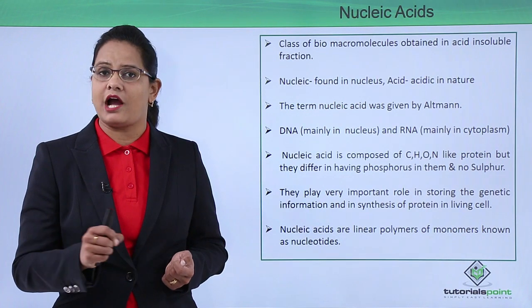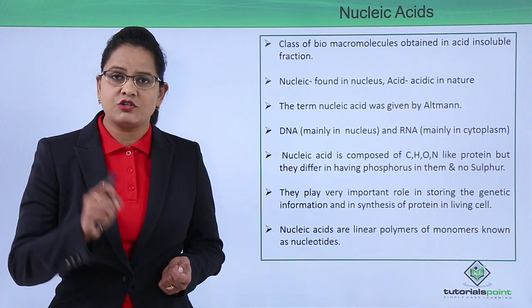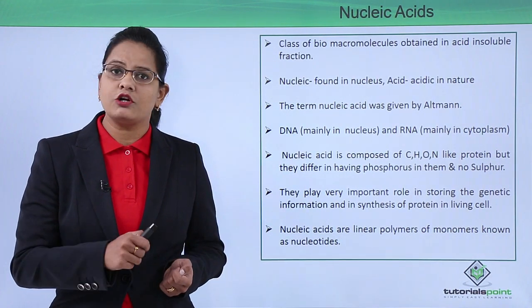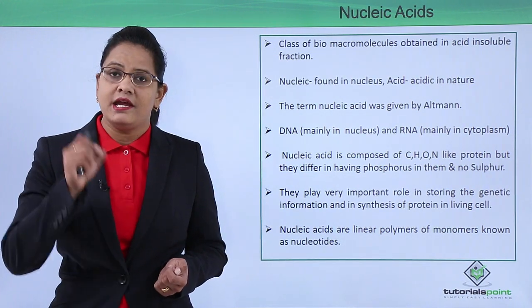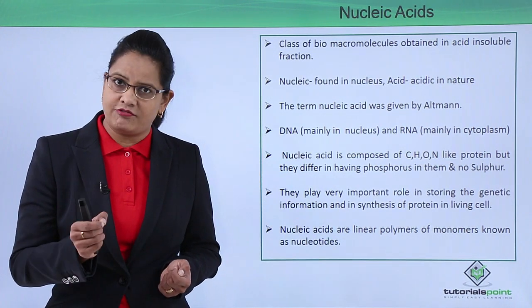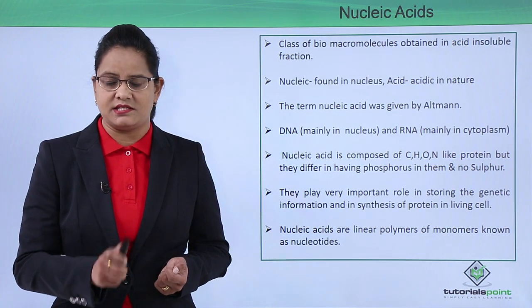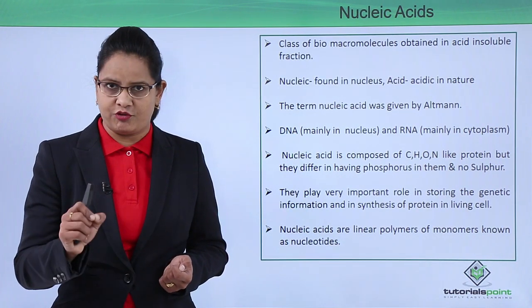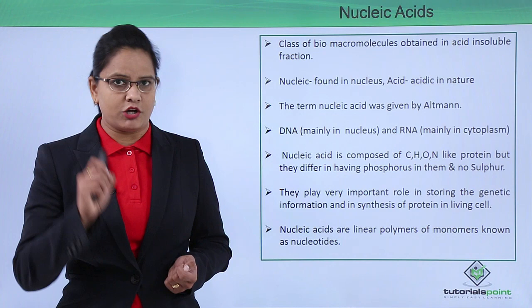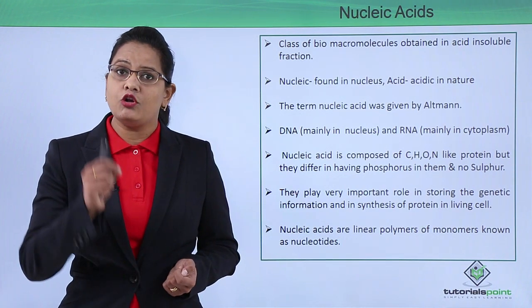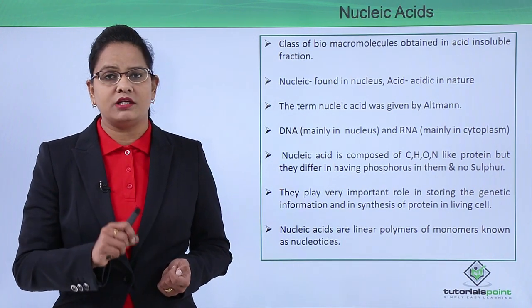Now this nucleic acid, just like other biomolecules, is made up of carbon, hydrogen, oxygen. In case of proteins we had nitrogen, so here also we have nitrogen. But there's one difference: in case of protein we had sulfur because of the cysteine amino acids, but here we have phosphorus group in them which comes from the phosphoric acid.